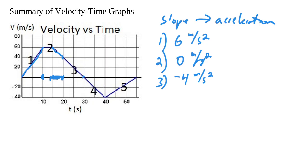Notice in segment four, we have the same slope — an acceleration of negative 4. The key difference is that in segment three we're slowing down, and at 30 seconds we're actually stopped. Then in segment four, we're speeding up but in the negative direction — going backwards. So the slope and acceleration are still the same; in one case we're slowing down, in the other we're speeding up backwards.